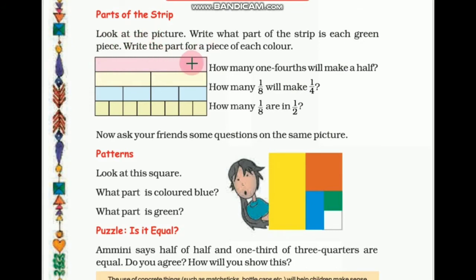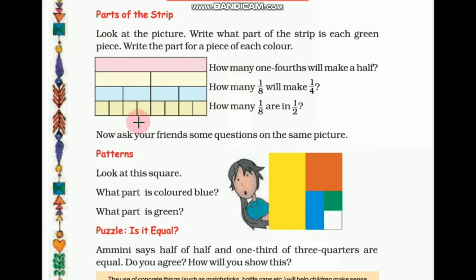Look at this picture. Write what part of the strip each green piece is. These all are green pieces and we have to write what part of the strip they are. Now write the part for a piece of each color. Four colors are given: pink, yellow, blue, and green. We have to write the part for a piece of each color.